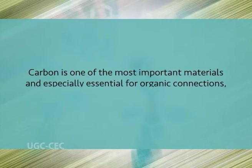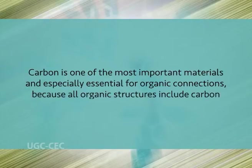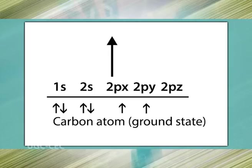Carbon is especially essential for organic connections because all organic structures include carbon. The atomic number of carbon is six. Its electronic configuration in the ground state is: 1s², 2s², 2px¹, 2py¹, and 2pz⁰. According to this configuration, there are two half-filled orbitals, so carbon should be bivalent. However, it is an established fact that carbon is tetravalent.